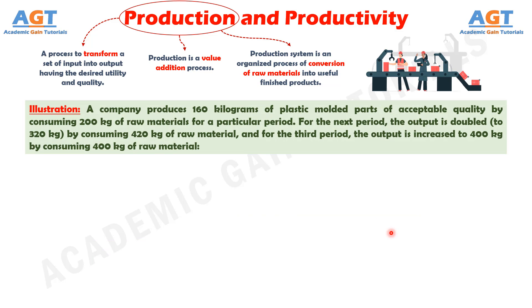Let's understand production versus productivity through a mathematical illustration. A company produces 160 kg of plastic molded parts of acceptable quality by consuming 200 kg of raw materials in a particular period. For the next period, the output is doubled to 320 kg by consuming 420 kg of raw material. For the third period, the output is increased to 400 kg by consuming 400 kg of raw material.